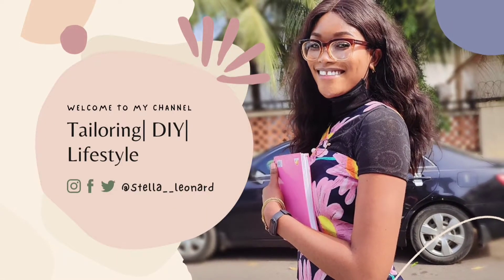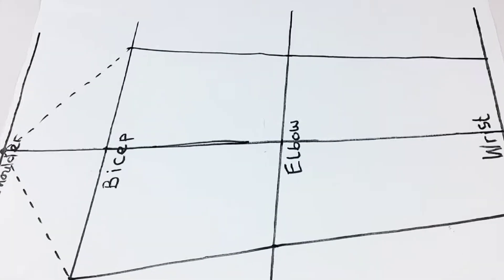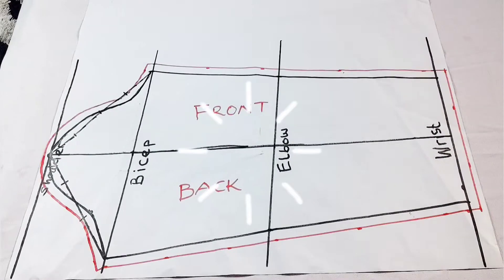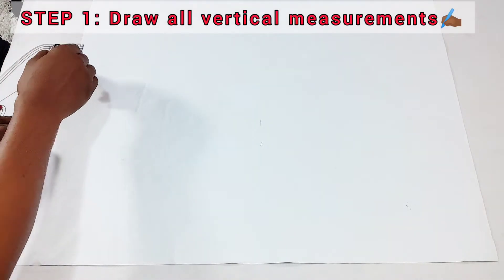Hi creatives, welcome to my channel. In this video we're going to be making the perfect sleeve in just five easy steps. Let's get started. First, you draw your shoulder line, which is where your sleeve is going to be starting.